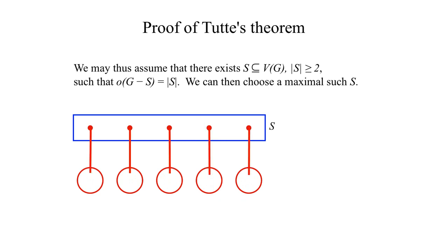Thus, by Hall's theorem, we can take one vertex from each odd component of G minus S and pair it with a vertex of S.